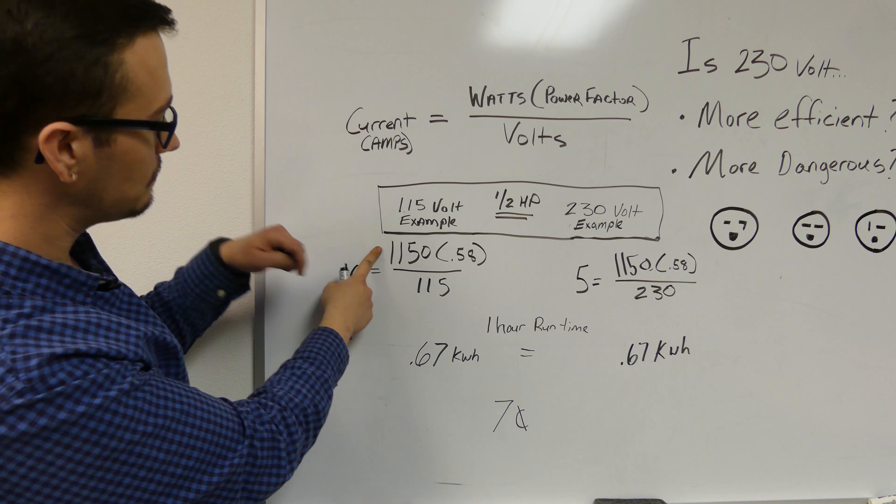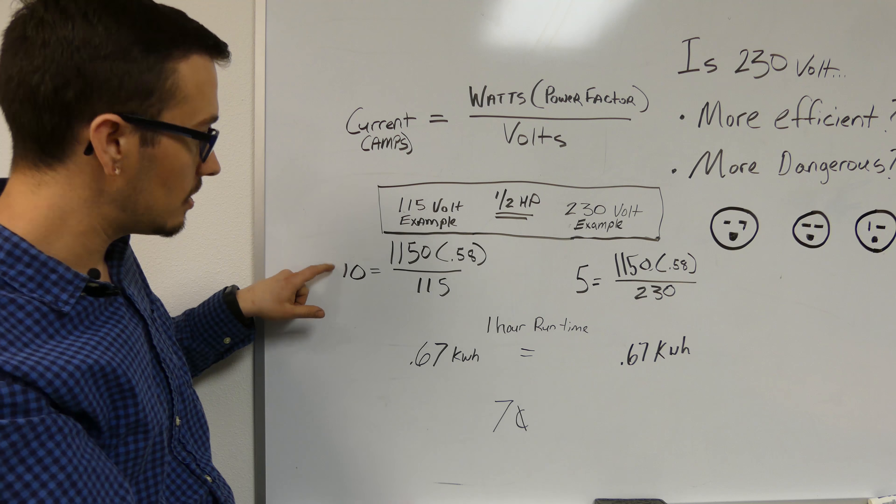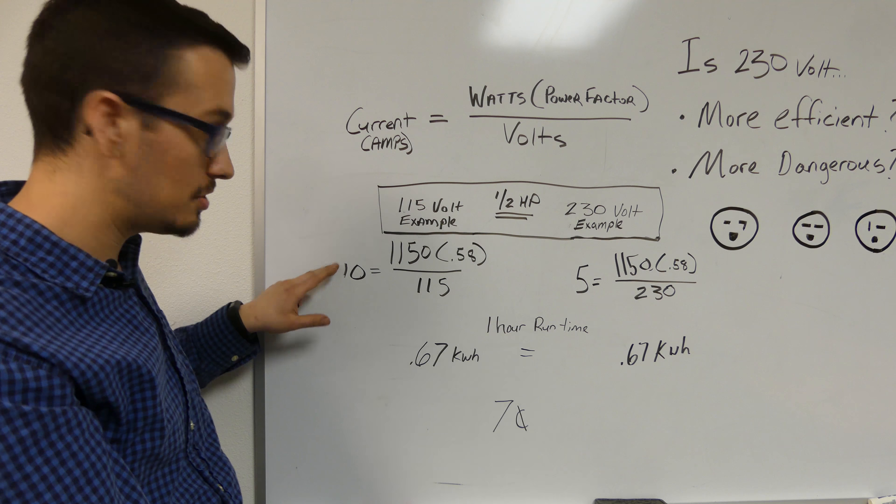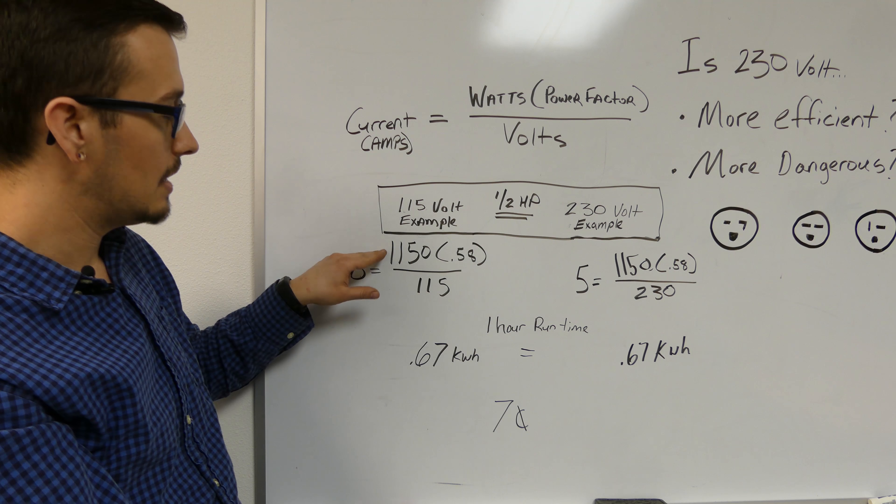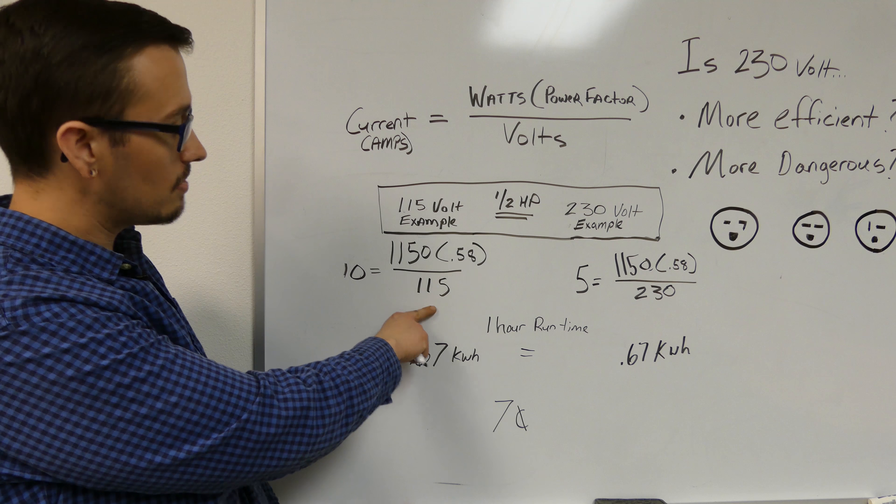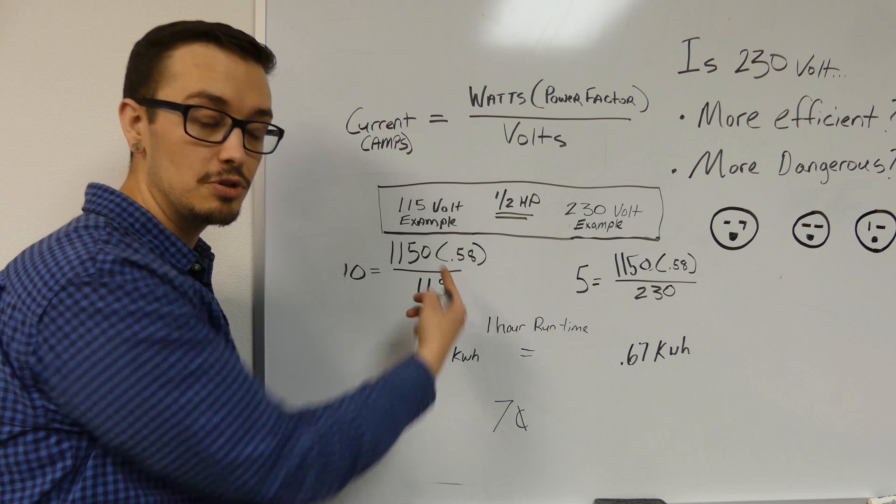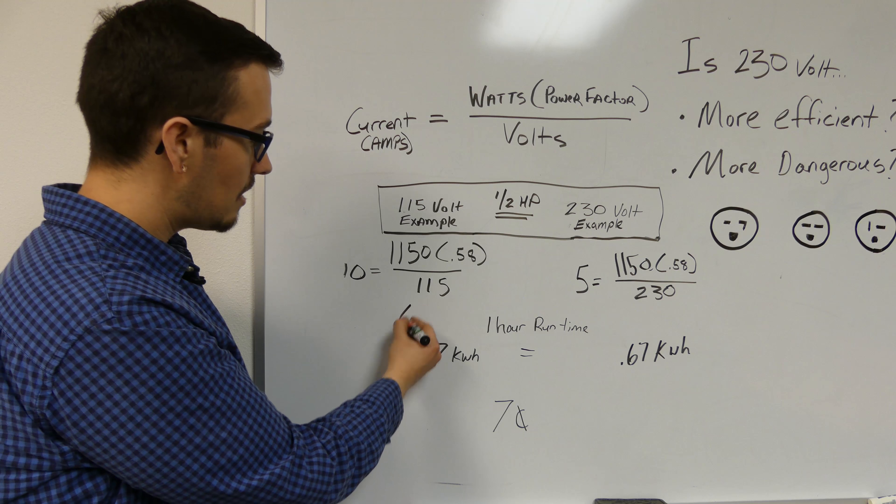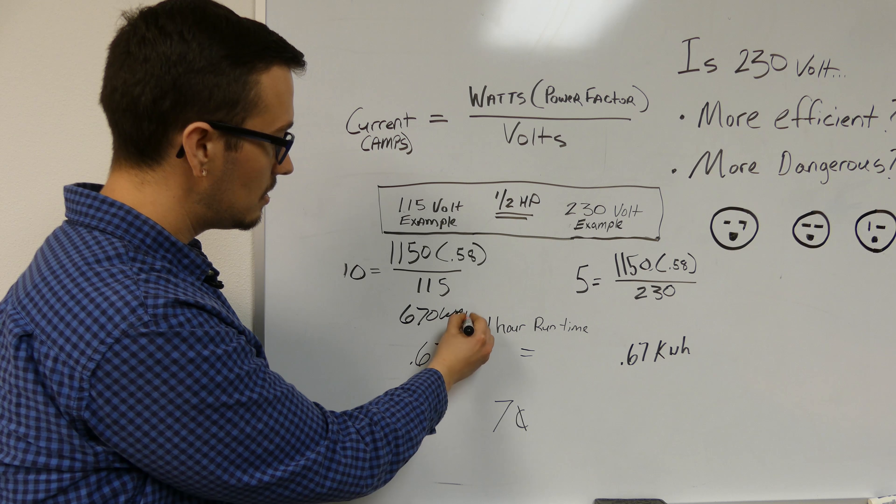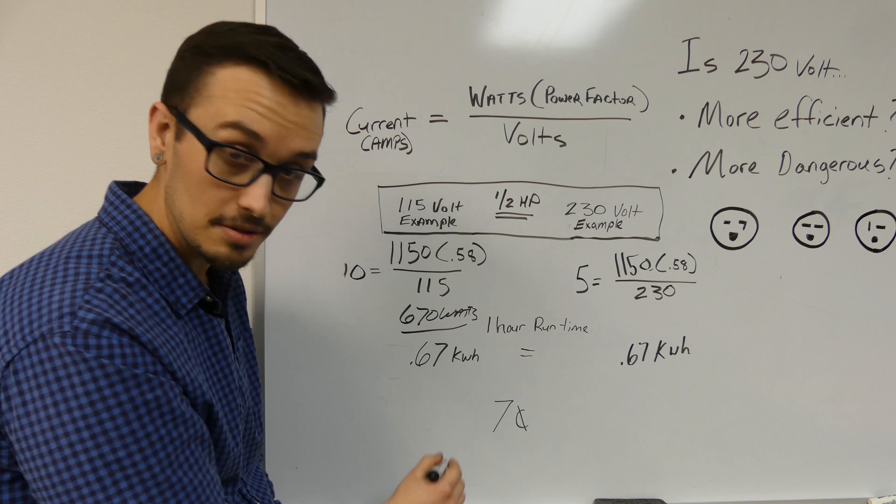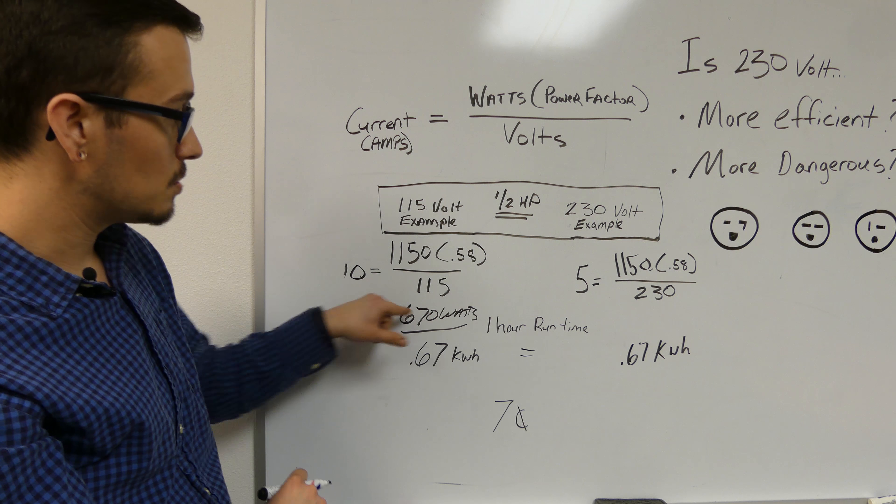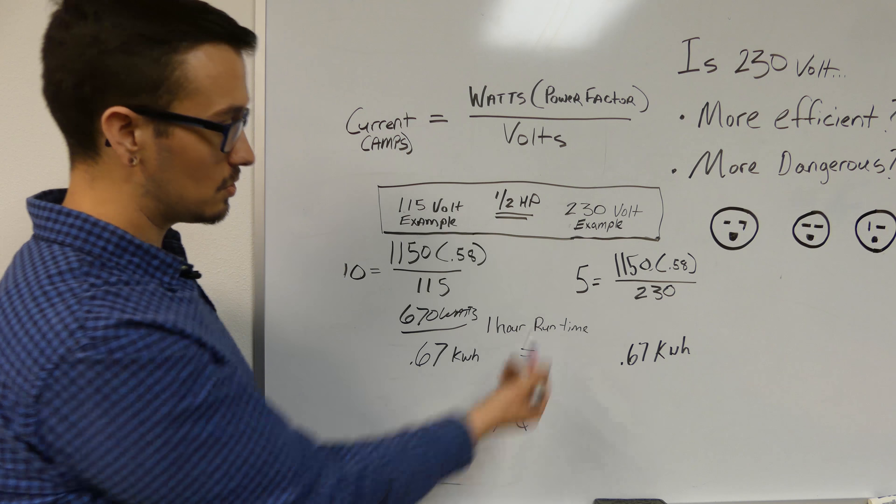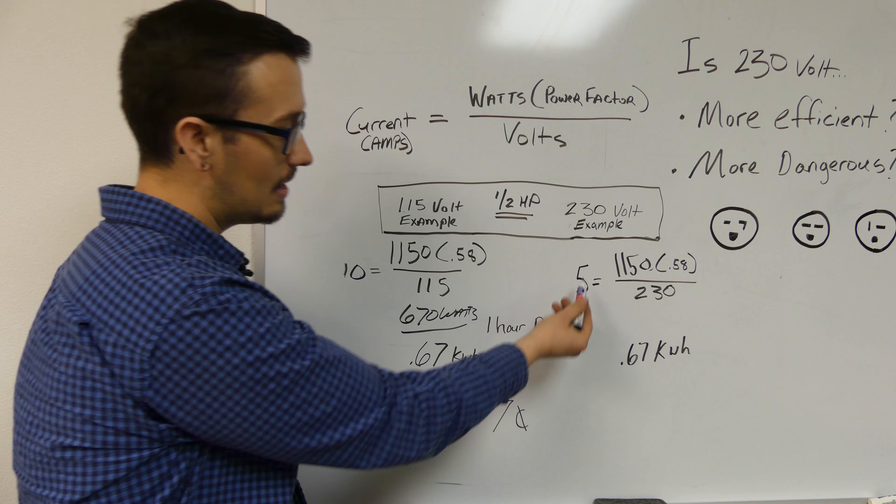We've got a 115 volt example here with half horsepower motor information shown. If we take 10 times 115, we get 1150. The motor is 10 amps on a half horsepower based on the pump manufacturer's nameplate information. We multiply 1150 by the power factor, which is also information on the motor, and we end up with about 670 watts.